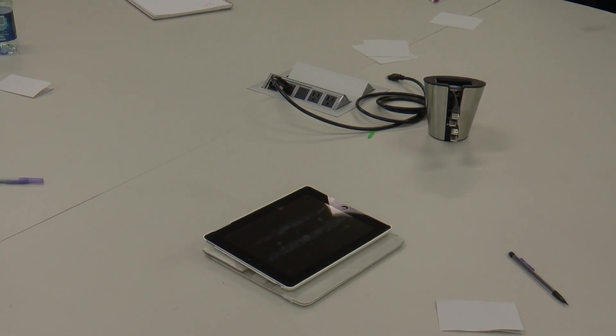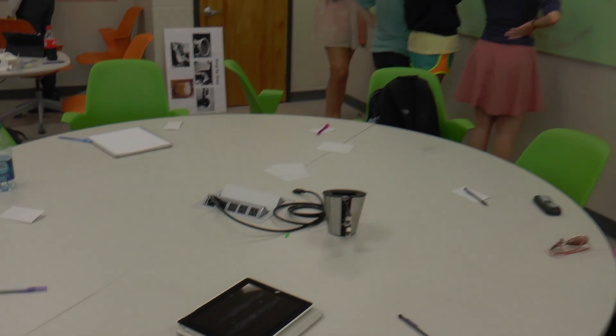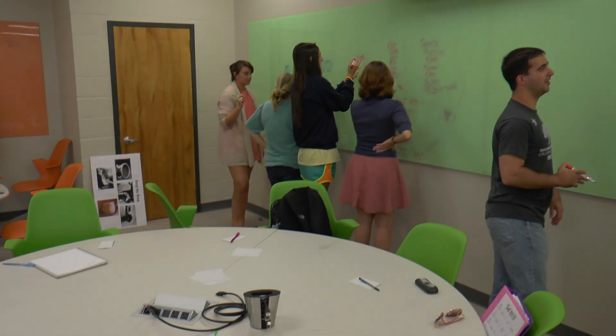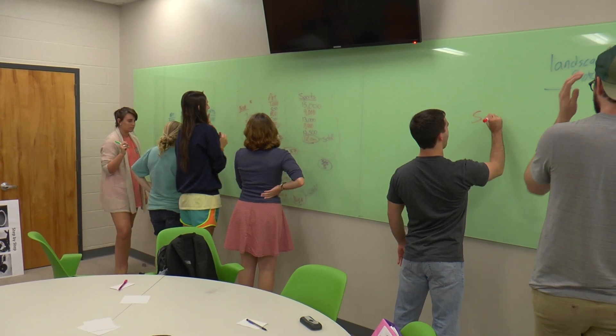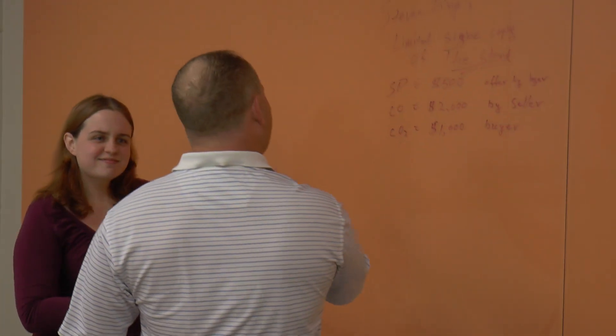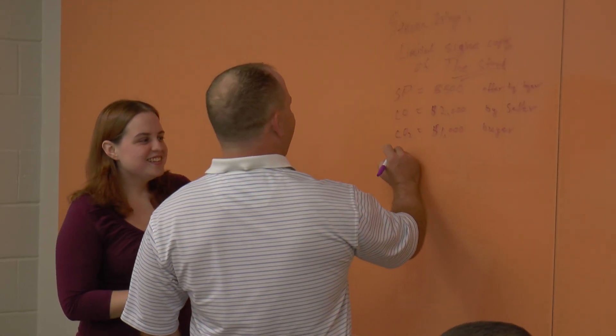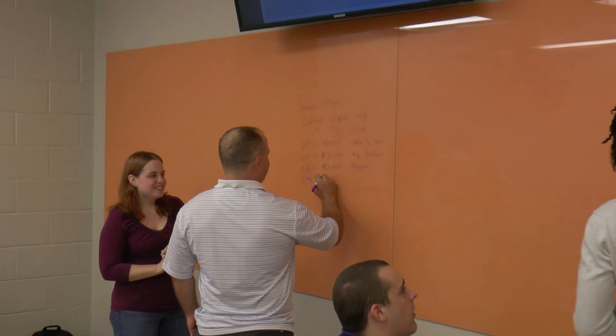Obviously what we need to do is first teach people how to discriminate amongst this sea of information, and then teach them how to apply it. That's the advantage this classroom format has over traditional teaching — we've reached the point where the information is just there anyway. You don't have to memorize it, but you do need to learn how to process and apply it.